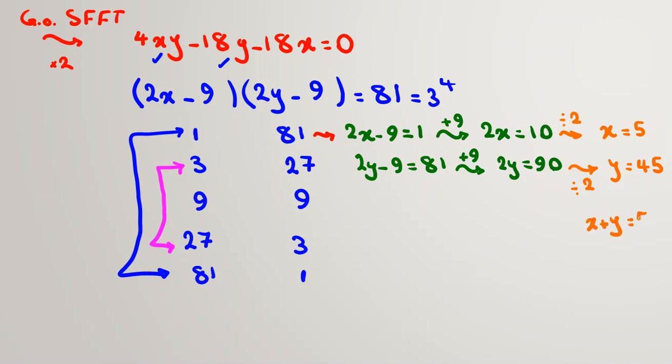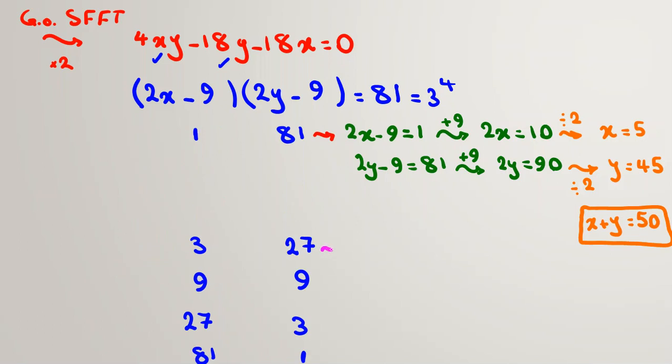You can also check that x and y satisfy the main equation. In this case, x + y = 50. So it's our first answer. Let's check other two cases. In this case, 2x - 9 = 3, 2y - 9 = 27. If we add by 9, 2x = 12, here 2y will be 36. If we divide by 2, x = 6 and y = 18. In this case, x + y will be 24. It is our second answer.